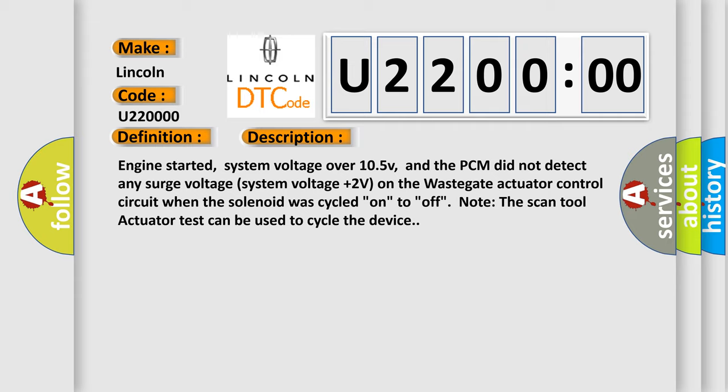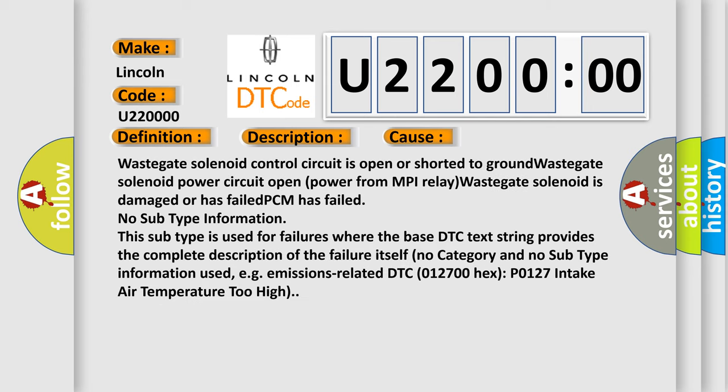This diagnostic error occurs most often in these cases. Wastegate solenoid control circuit is open or shorted to ground. Wastegate solenoid power circuit open power from MPI relay. Wastegate solenoid is damaged or has failed. PCM has failed.